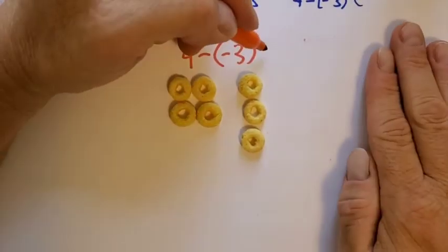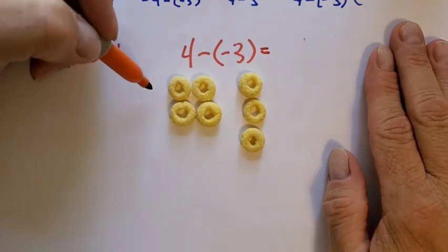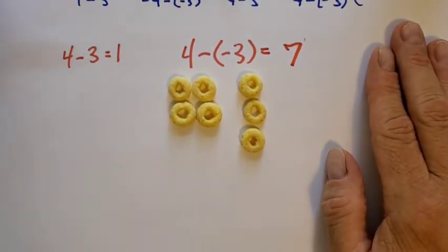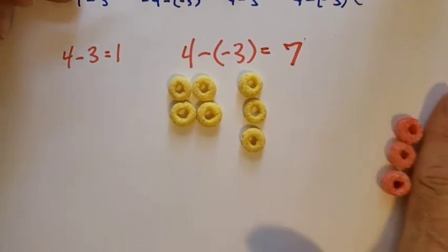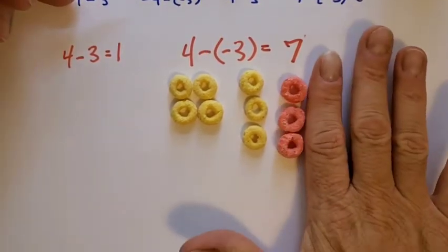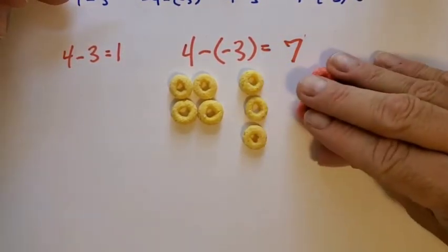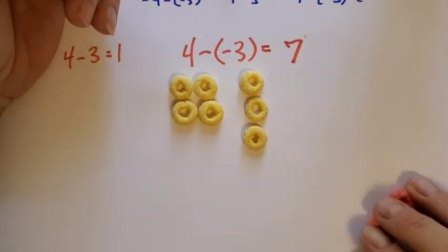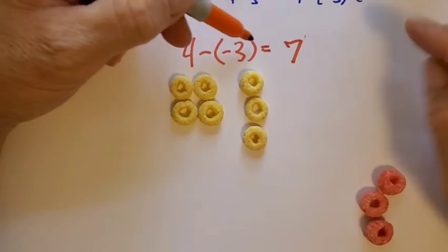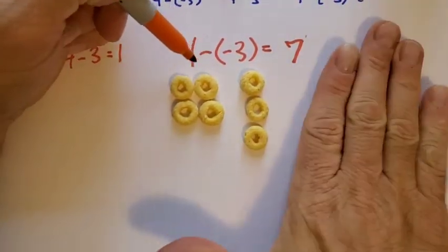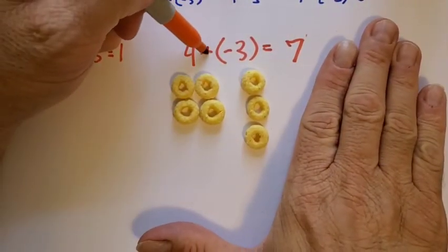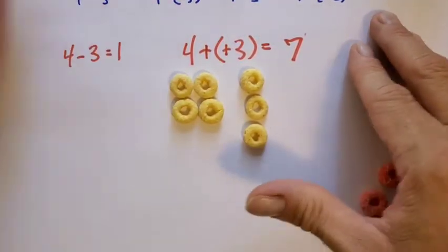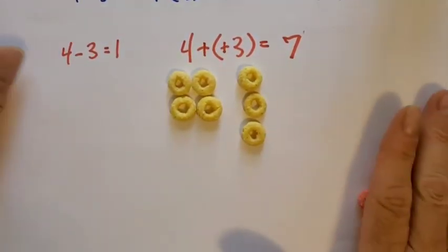I brought in these neutral pairs and I'm going to use them. Now I can take out the 3 reds. And what do I have? What's our answer? Look at that. So the shortcut — to be honest with you — is to not do all this. The shortcut is to change the problem and add the opposite of whatever that is.